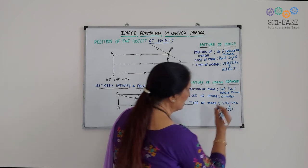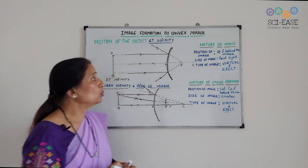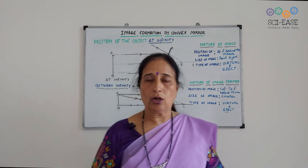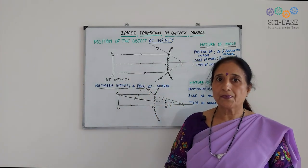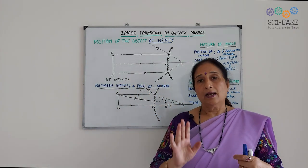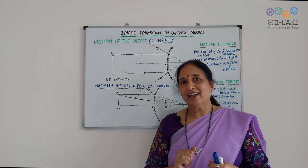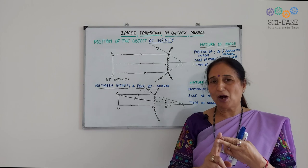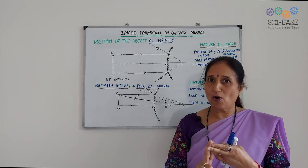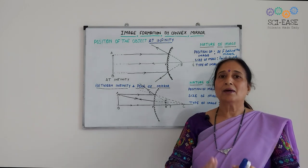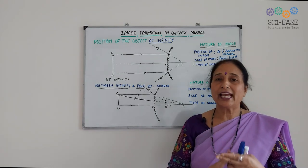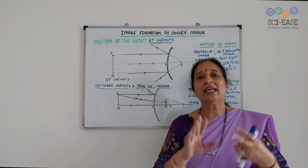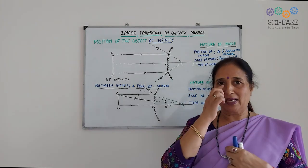So I think the two ray diagrams are clear to all of you. We have read about the image formed by the plane mirror, by the concave mirror, and by the convex mirror.